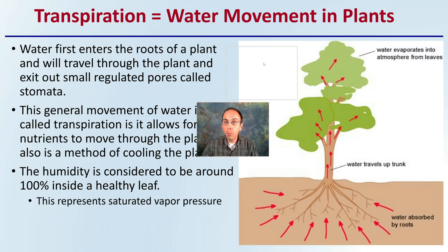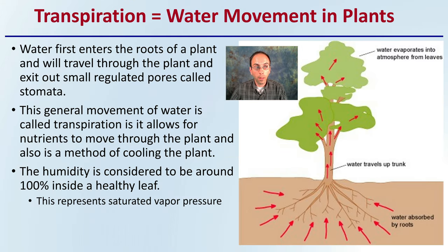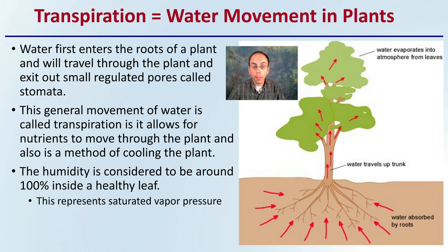Now, transpiration — this is the movement of water in plants. Water first enters the roots of the plant and will travel through the plant and exit out small regulated pores called the stomata. This general movement of water is called transpiration, and it allows for nutrients to move through the plant and is also a method of cooling the plant. Most of the plant's water uptake is used for cooling. The humidity is considered to be around 100% inside the leaf, which represents saturated vapor pressure.